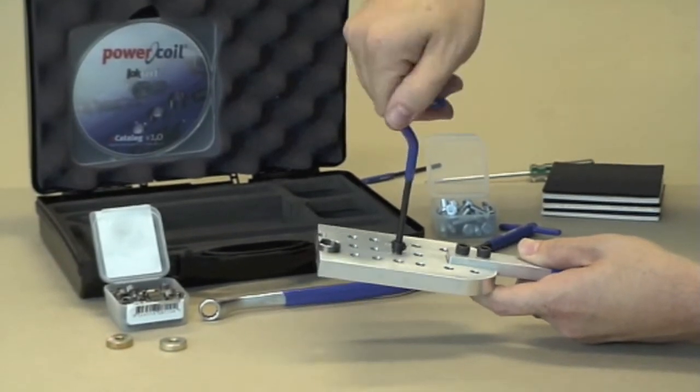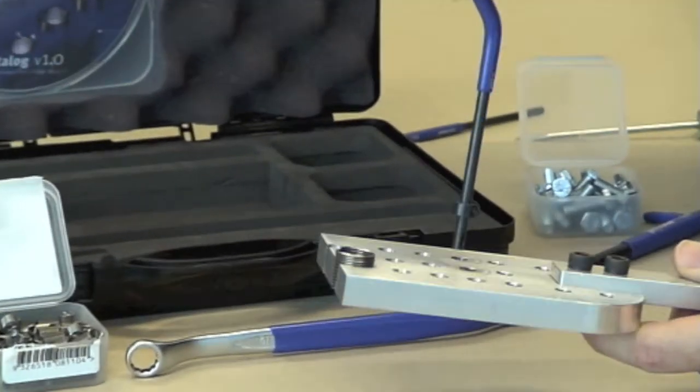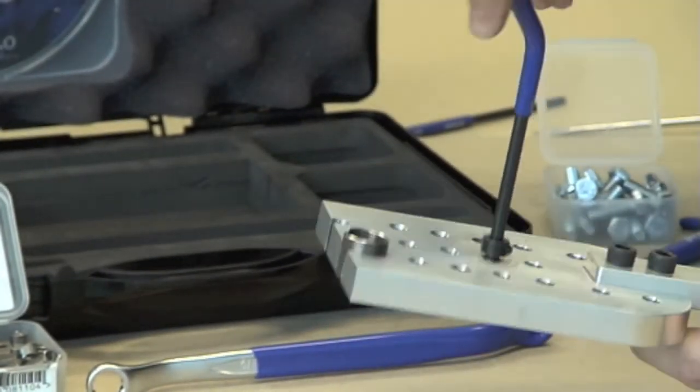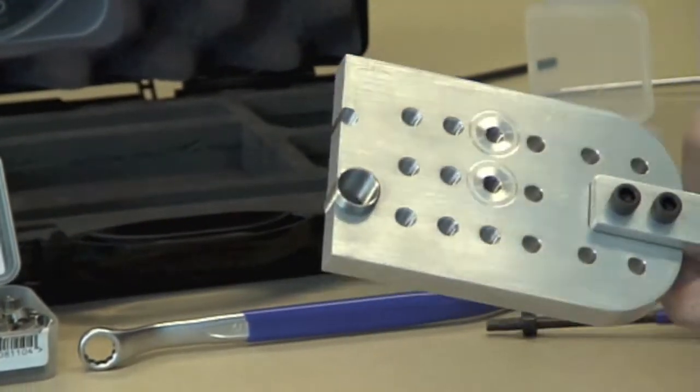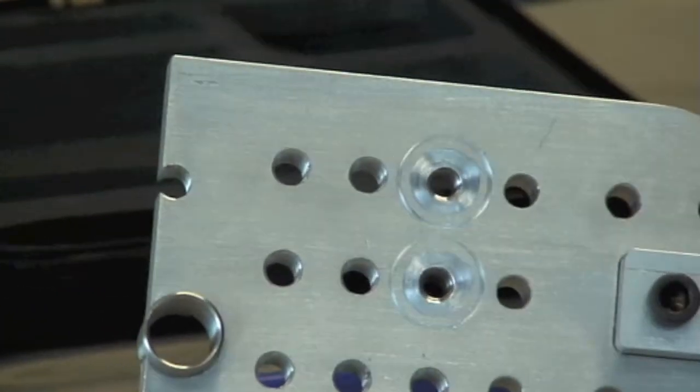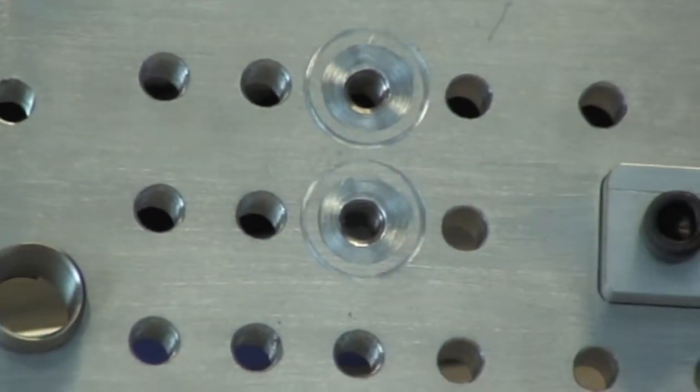As the collar is getting closer to the parent material, you can slow down a bit and have a look. The ideal depth for installing an insert is about one to one and a half turns below the surface.